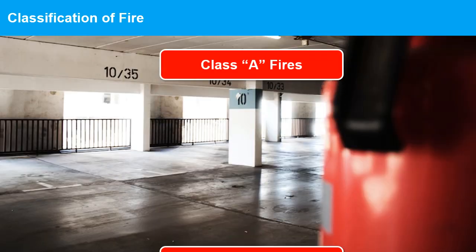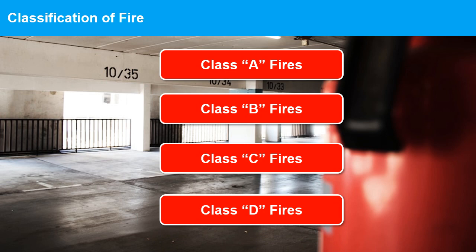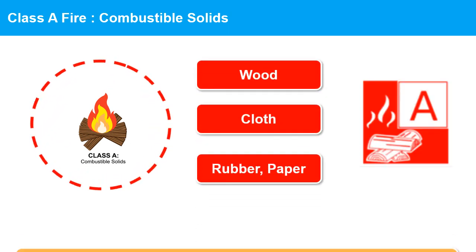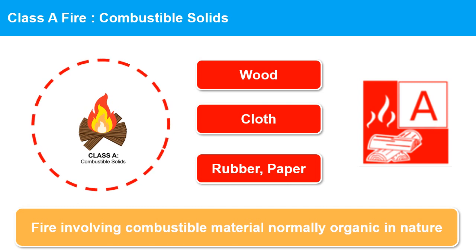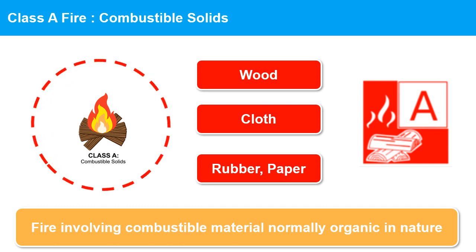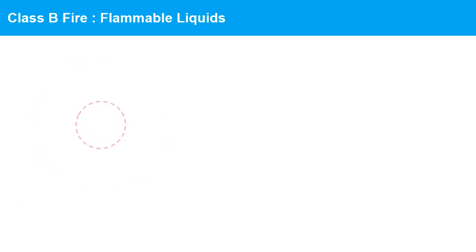Fires can be classified into different categories based on the nature of the fuel involved, the cause of the fire, and the type of combustion. The most common classification of fires is Class A, Class B, Class C, and Class D fires. Class A fires are fires that involve ordinary combustibles such as wood, paper, cloth, rubber, and plastic.